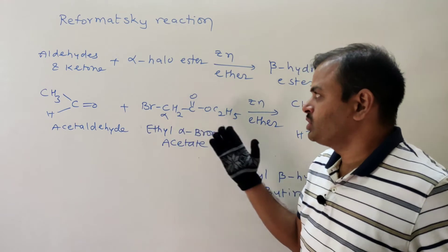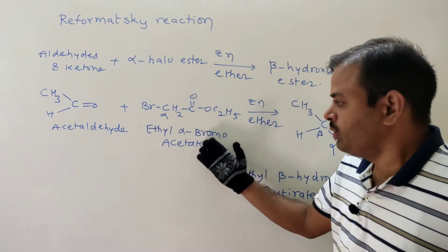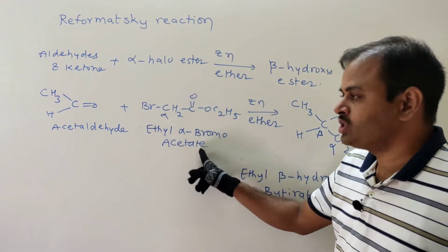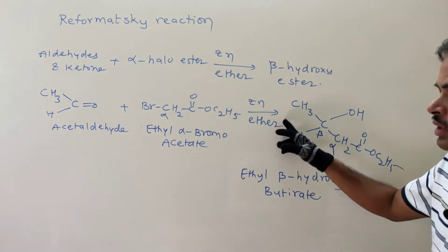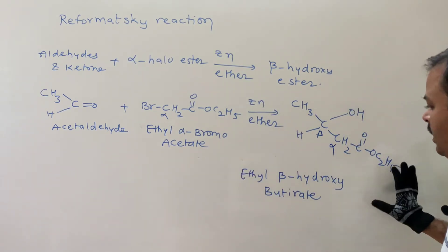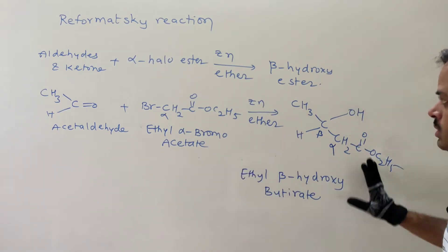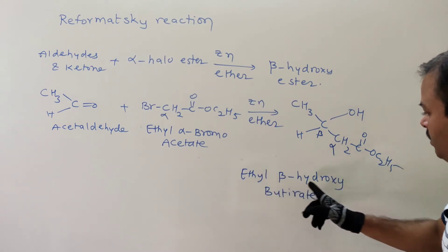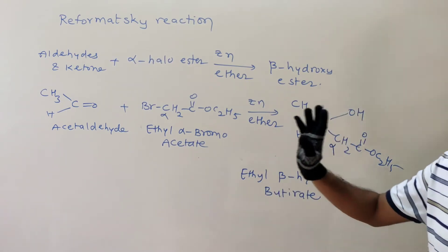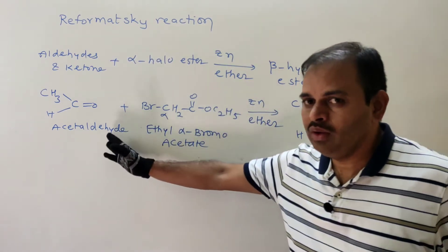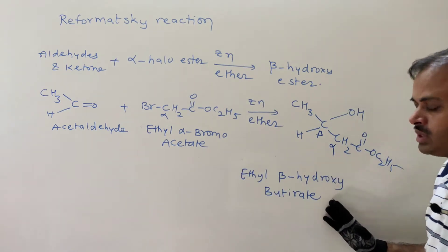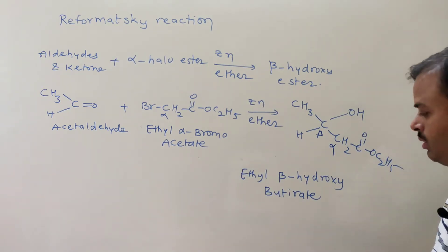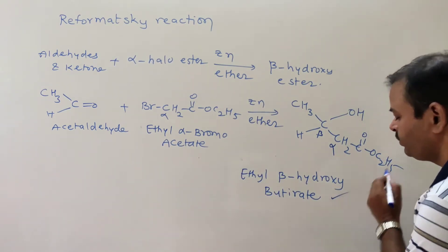In summary: acetaldehyde reacts with ethyl alpha-bromoacetate (the alpha-bromoester) in the presence of zinc and ether to give the beta-hydroxyester product ethyl beta-hydroxybutyrate.